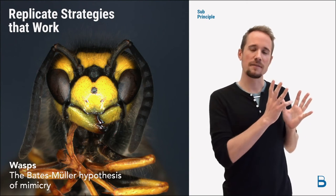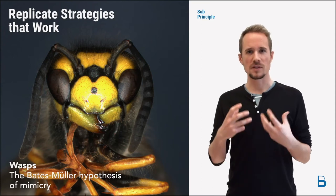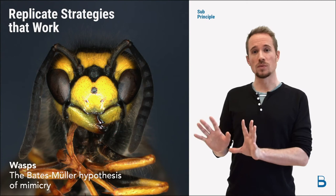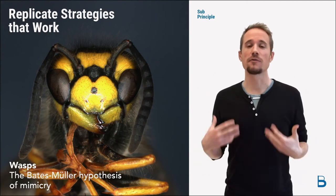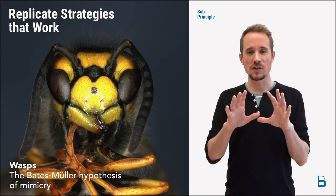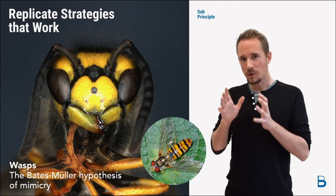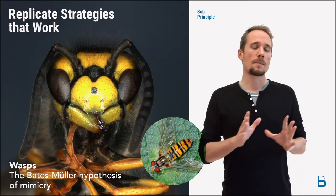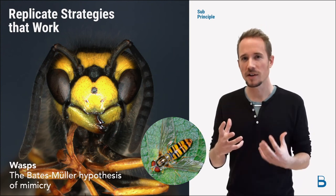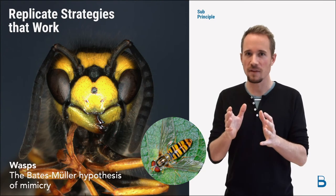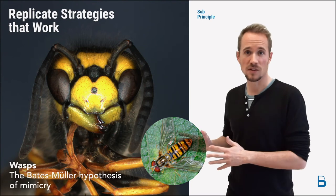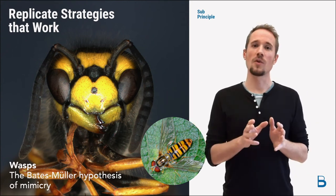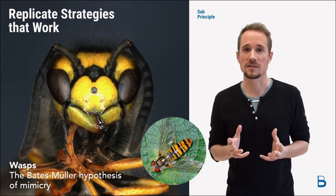The more animals have that warning pattern, the more it reinforces itself. If many wasps look very similar and have these strong patterns, it will happen more often that some animal wants to eat a wasp, gets stung, and learns that color combination is dangerous. But there's also a different kind of mimicry — where a totally different species starts to mimic the looks of another species. There are many other insects that look similar to wasps with the yellow-black warning pattern, even though they don't have a sting and they're not dangerous. It was advantageous for them to look similar to wasps. We can find many hoverflies and many species that look similar to wasps.